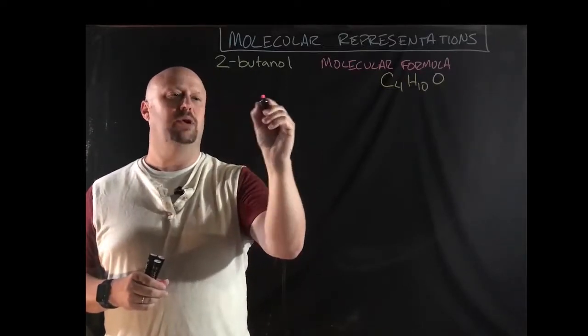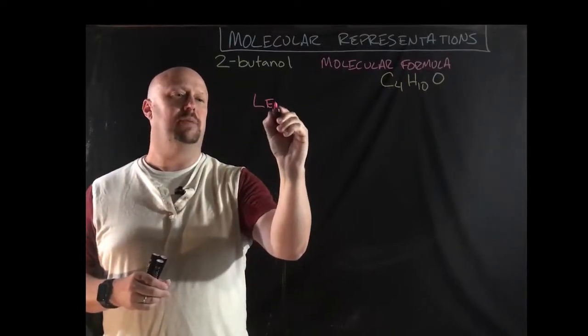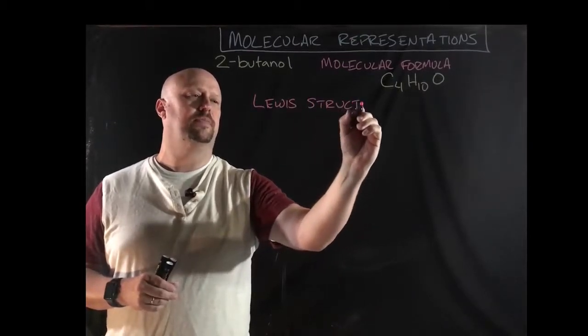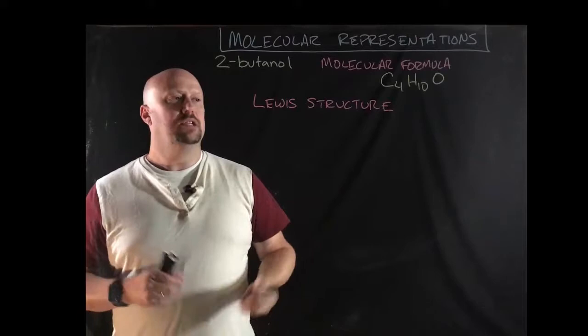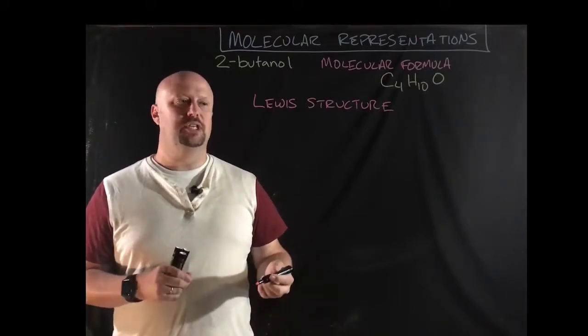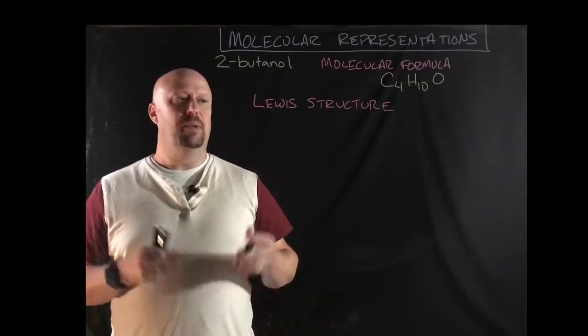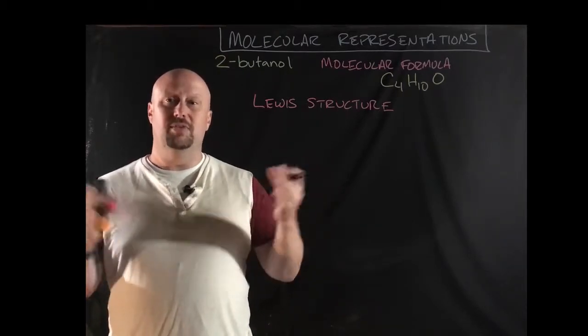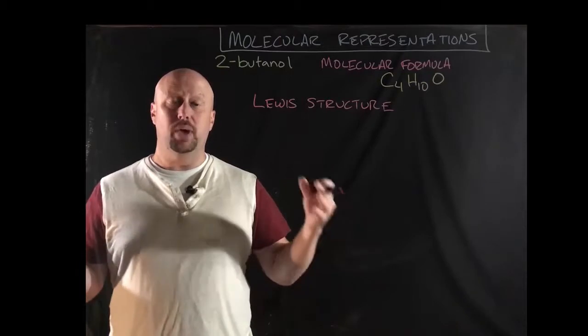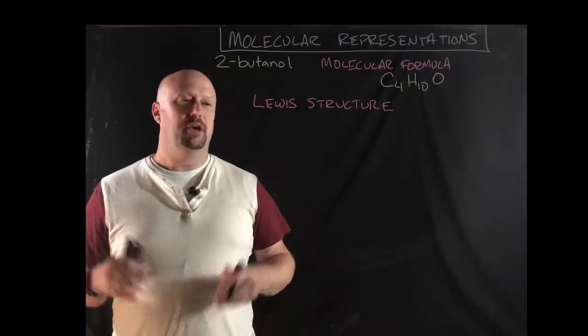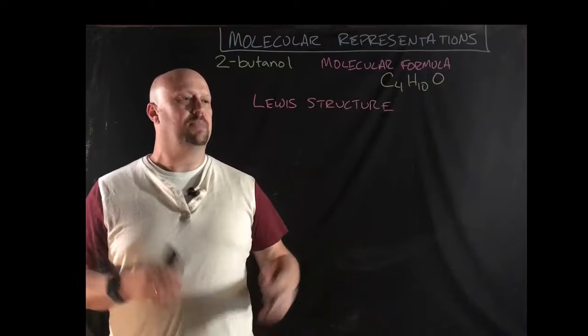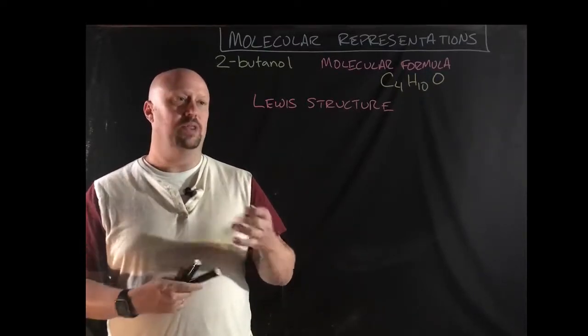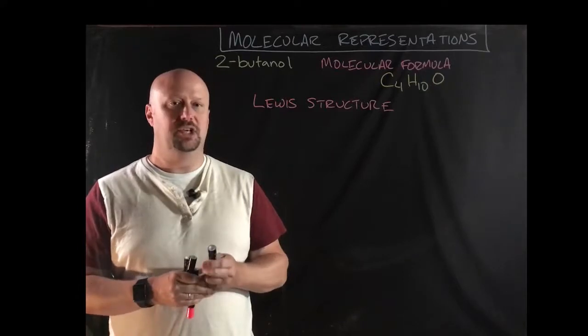So our fallback and what you learned a long time ago in chemistry is to draw the Lewis structure. So we're going to draw the Lewis structure for this molecule, and remember that what the Lewis structure means is that you've taken all of the electrons and you've accounted for all the electrons and you're showing all of the electrons, and you're making sure that things fit the octet rule and those sorts of things.